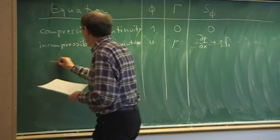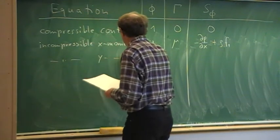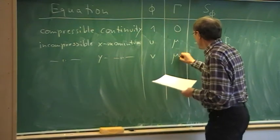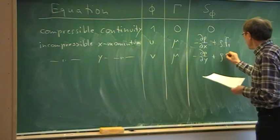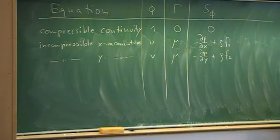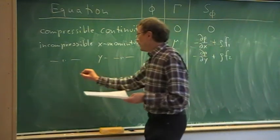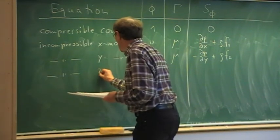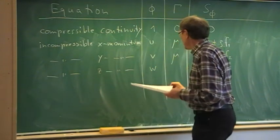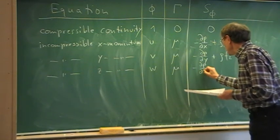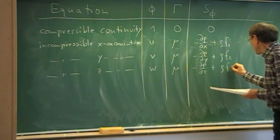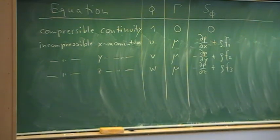Similarly for the y-momentum equation, phi is v, the diffusion coefficient is mu, and the source term is minus dp/dy plus rho*f2 — the y-component of, for example, gravitational acceleration. For the z-momentum equation, phi is w, diffusion coefficient is mu, and the source is minus dp/dz plus the z-component of rho*f.